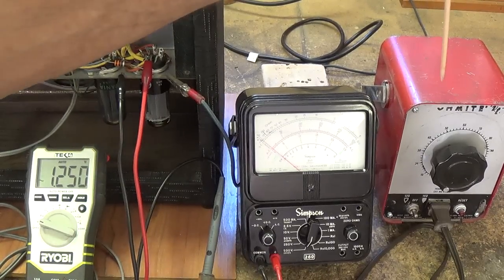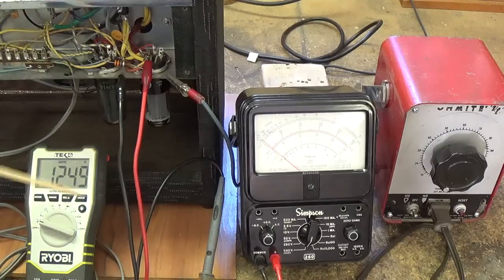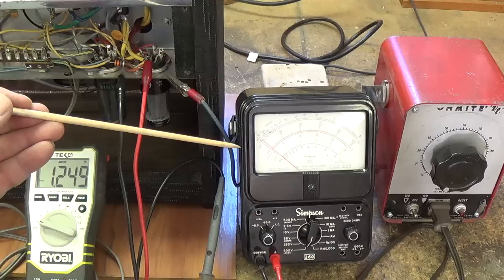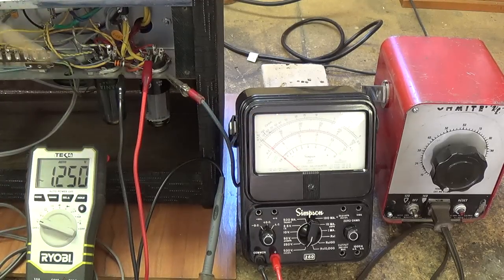Okay, as you can see, cranking up the voltage gently with the variac from zero up to 120 volts gave us a very nice slow rise in the B plus output from the rectifier.